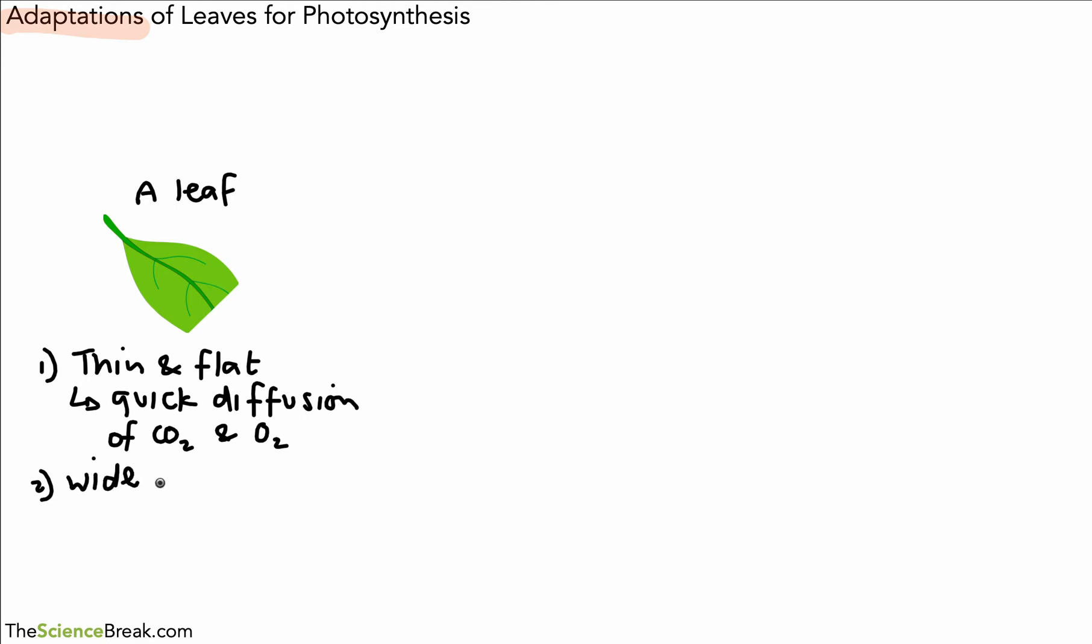The second one is the idea that leaves are often wide, not only thin and flat but quite wide. And this allows them to absorb more sunlight, or to absorb as much sunlight as possible, because as we said, sunlight is very important for photosynthesis.